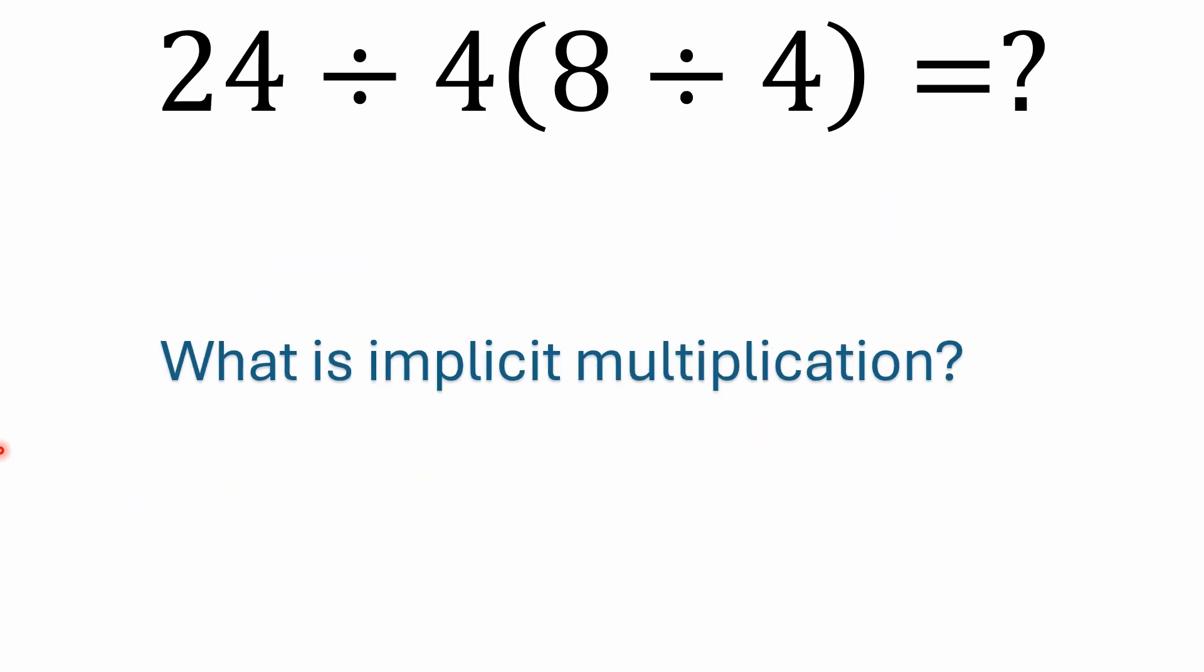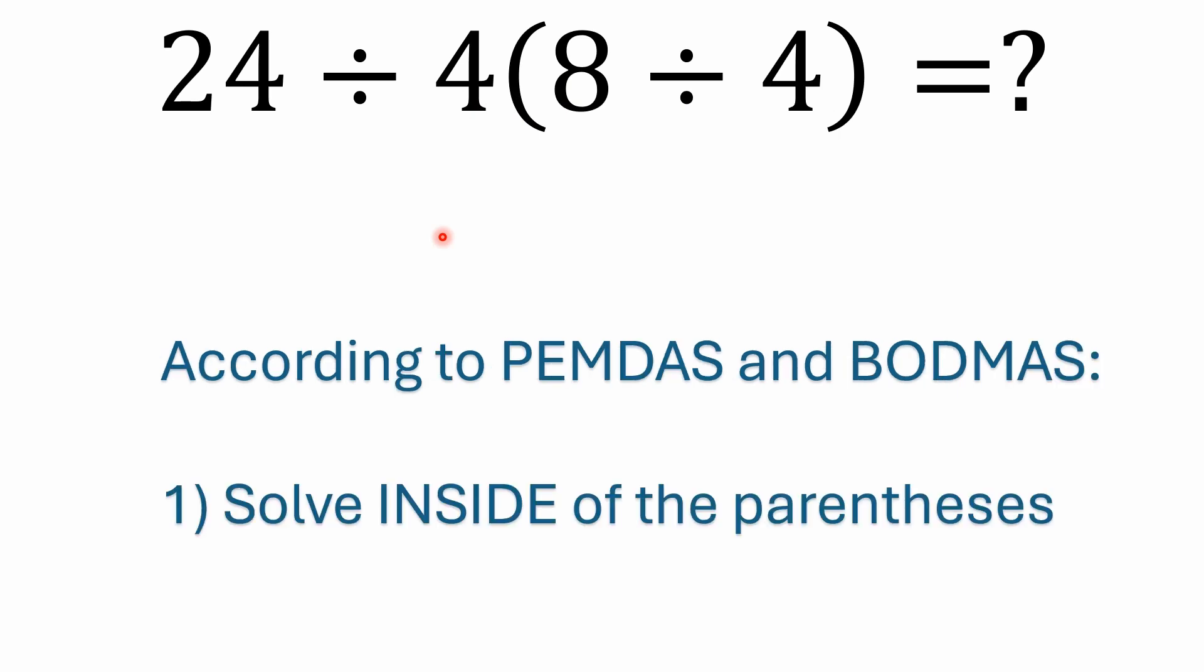And then, what is implicit multiplication? I do see some people who forget that when you see this four outside of the parentheses, they actually forget that this is implied multiplication. So you're implying multiplication by this, multiplying four by what's inside of the parentheses. So yeah, what is implicit multiplication? I just mentioned that it's this right here, four times what's inside of these parentheses.